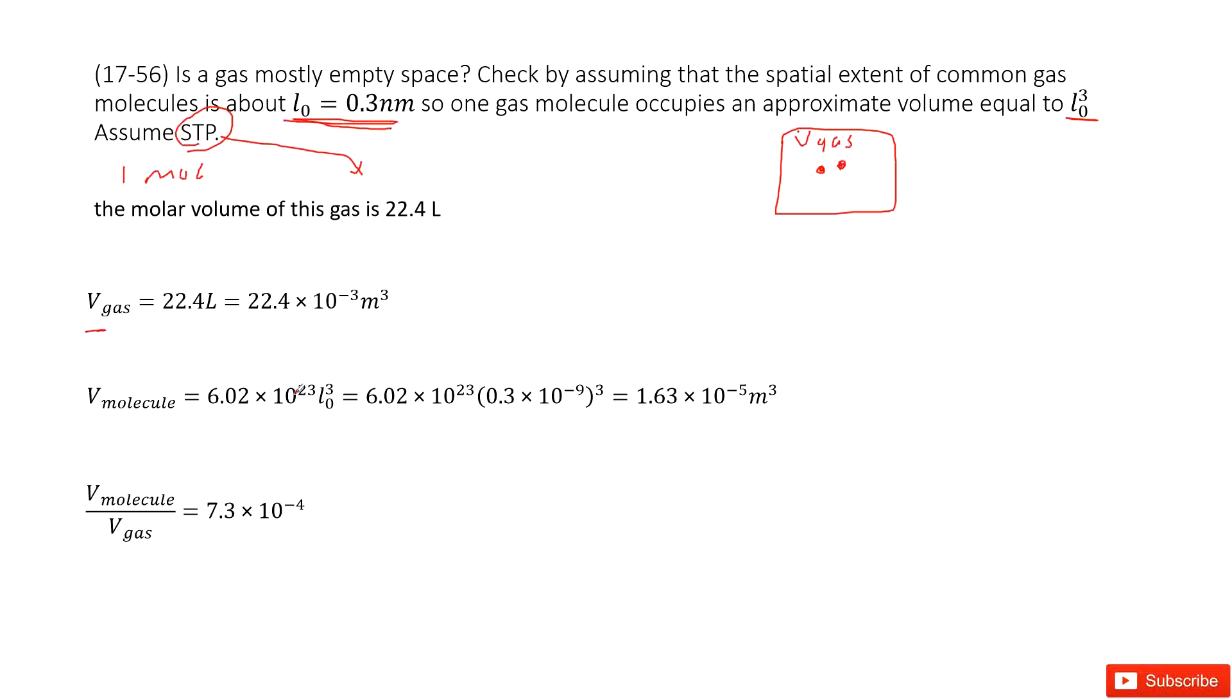We know for one mole of gas, how many molecules it has. We have this constant, Avogadro's number. And then times the side length cubed for the molecules. So we have L0 cubed.